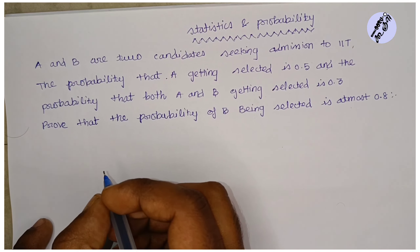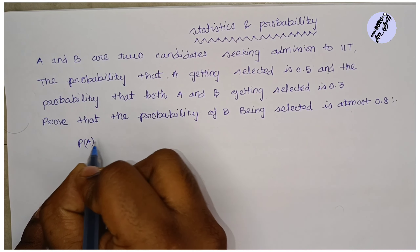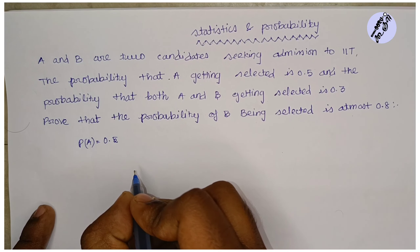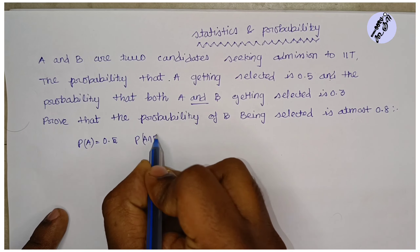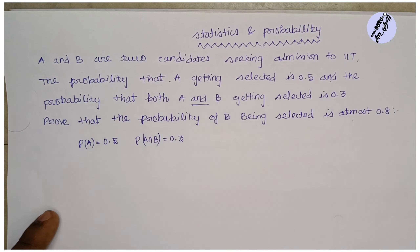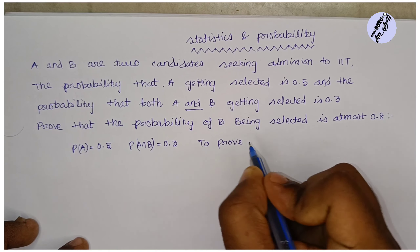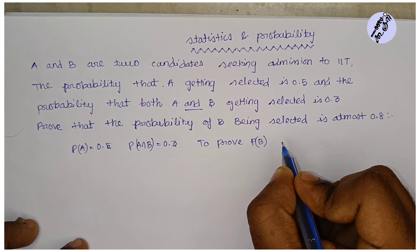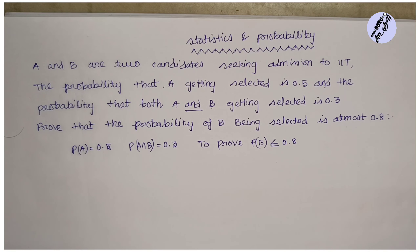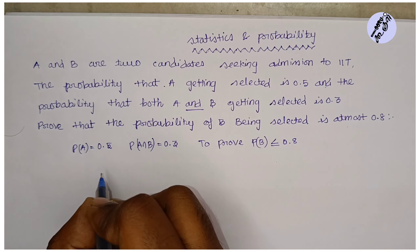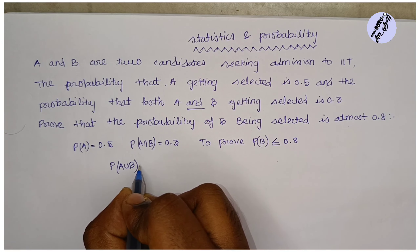So, probability of A is equal to 0.5, and probability of A∩B is equal to 0.3. We know that probability of A union B is less than or equal to 1.